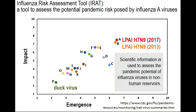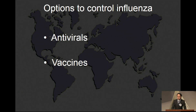These are the scientific findings, and based on them we can evaluate the pandemic potential of a virus. CDC established a tool called IRAT, and using this tool one can determine that H7N9 is the virus we are most concerned about. To control influenza, we have two options: antivirals and vaccines. Dr. Fauci is going to discuss vaccines, so I will briefly discuss antivirals.